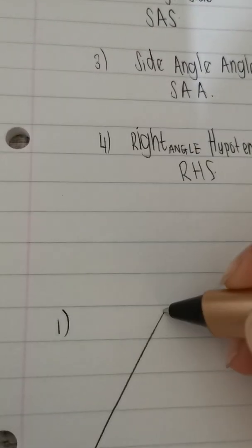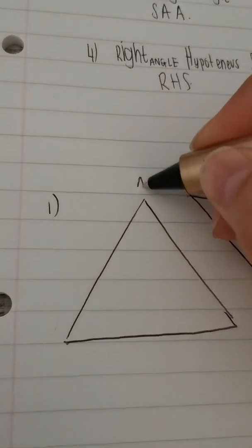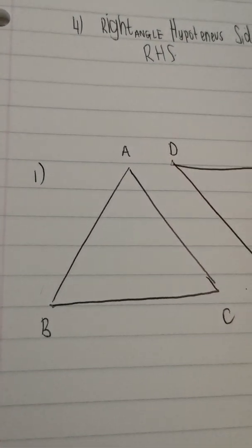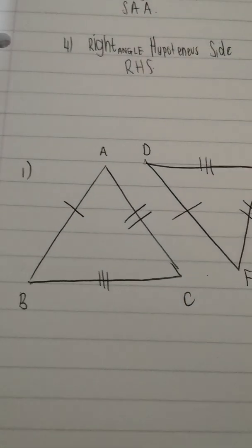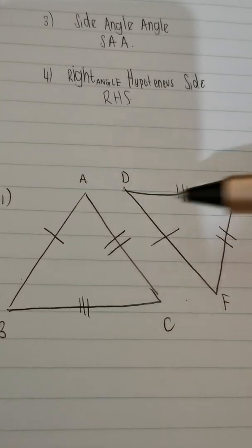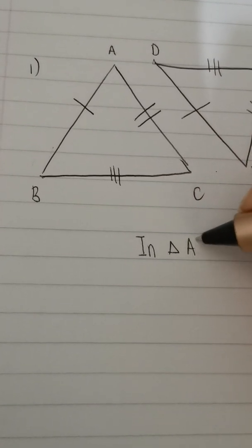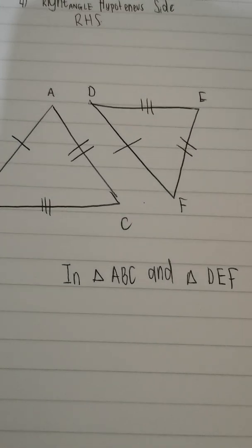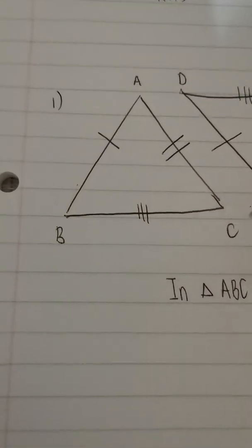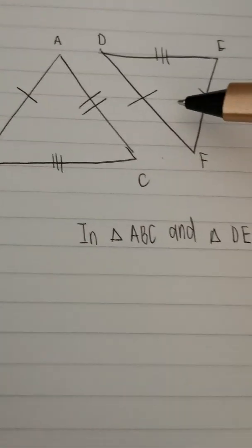I'm going to start with side-side-side. I'll start really simple and then we'll do more complicated questions. They could give it to you like this — let's name this triangle ABC and the other triangle DEF. They could give you a diagram like this and ask you to prove that triangle ABC is congruent to triangle DEF. You start by stating: in triangle ABC and triangle DEF — listing which triangles you're working with.